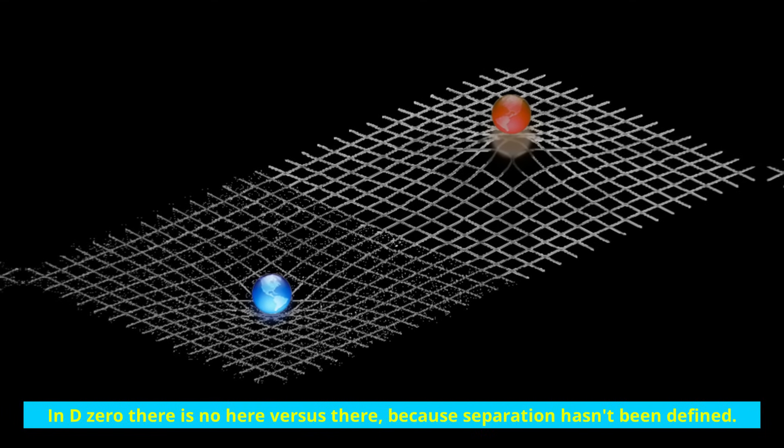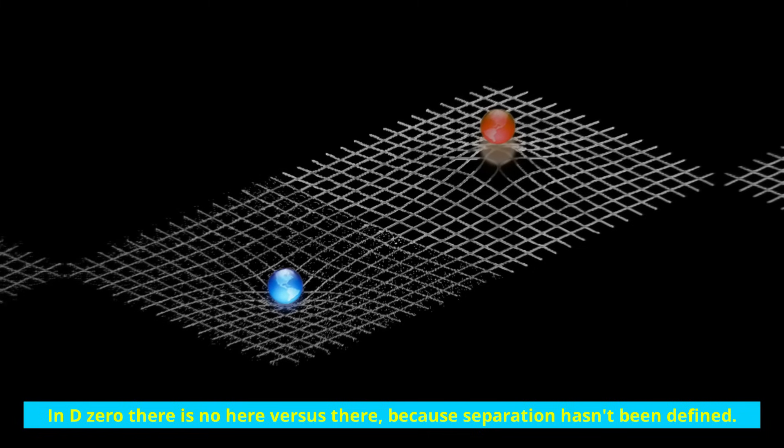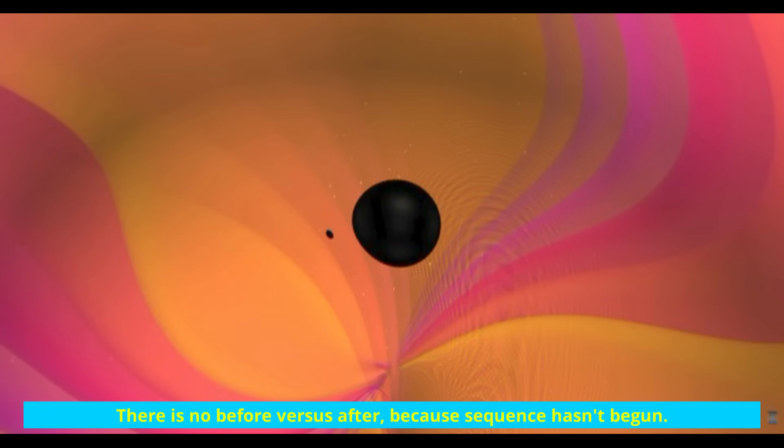In D zero, there is no here versus there, because separation hasn't been defined. There is no before versus after, because sequence hasn't begun.